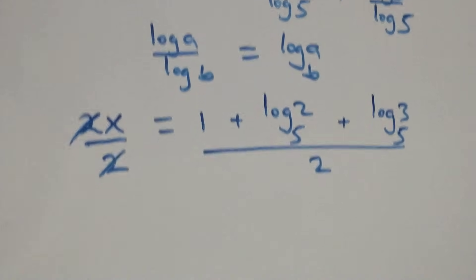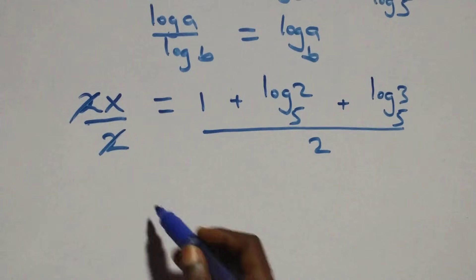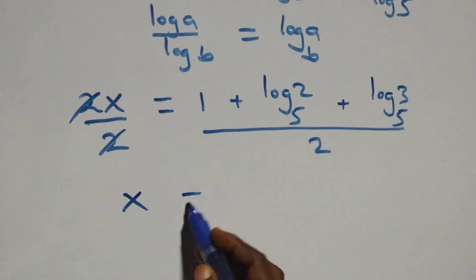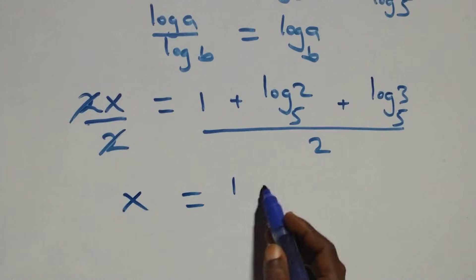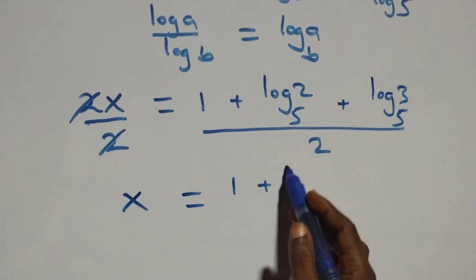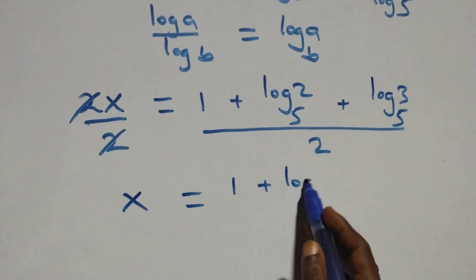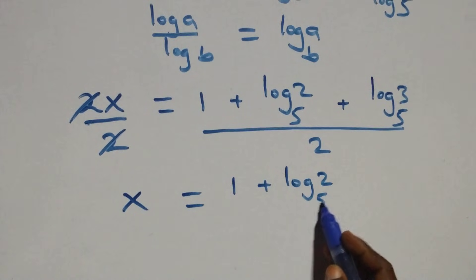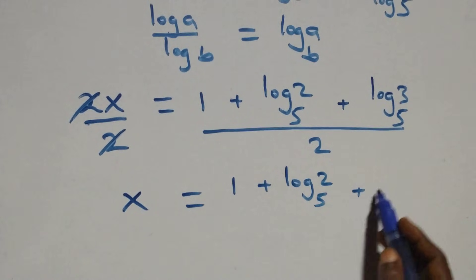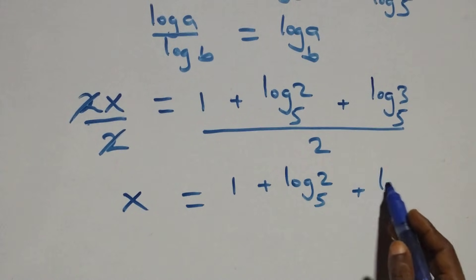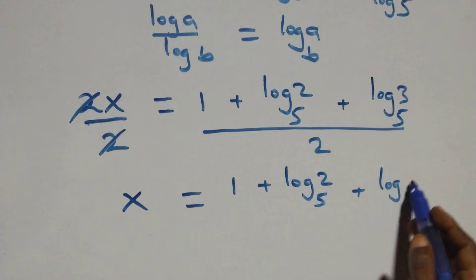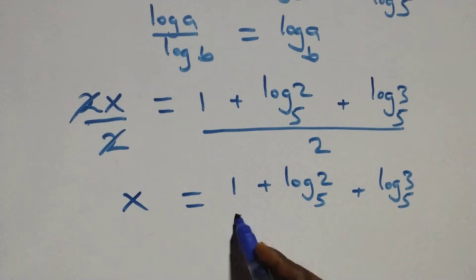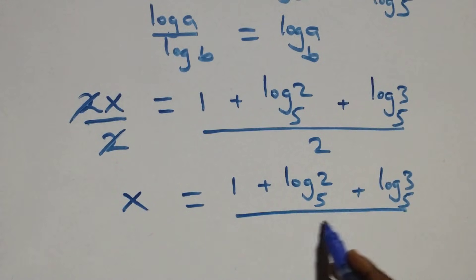We divide both sides by 2. The 2s cancel each other, and we have x equals (1 plus log₅2 plus log₅3) all over 2.